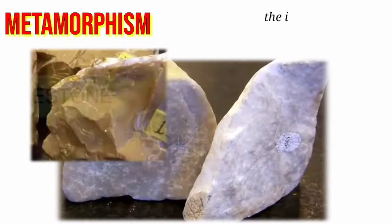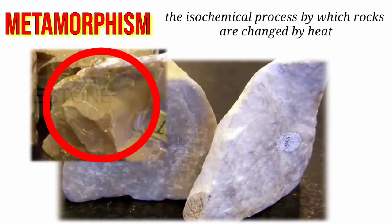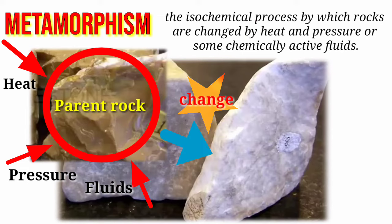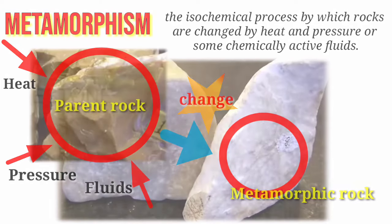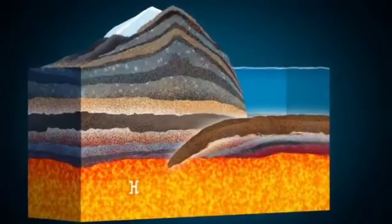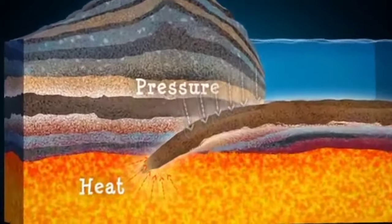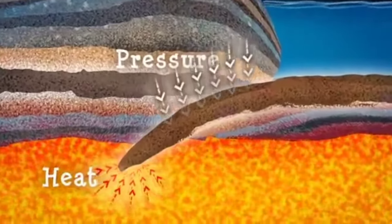Metamorphism refers to the isochemical process by which rocks are changed by heat and pressure or some chemically active fluids. The chemical composition of the parent rock will be the same as the metamorphic rock produced. During metamorphism, rocks change because the minerals need to be stable under new temperature and pressure conditions.